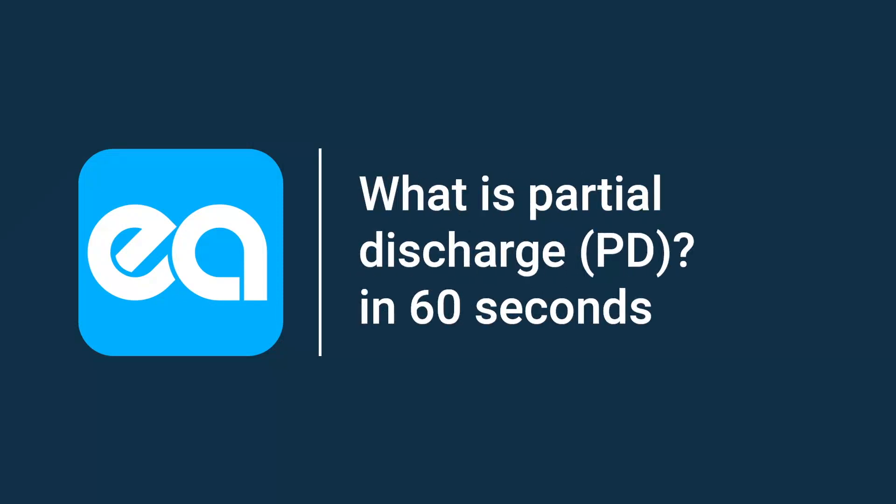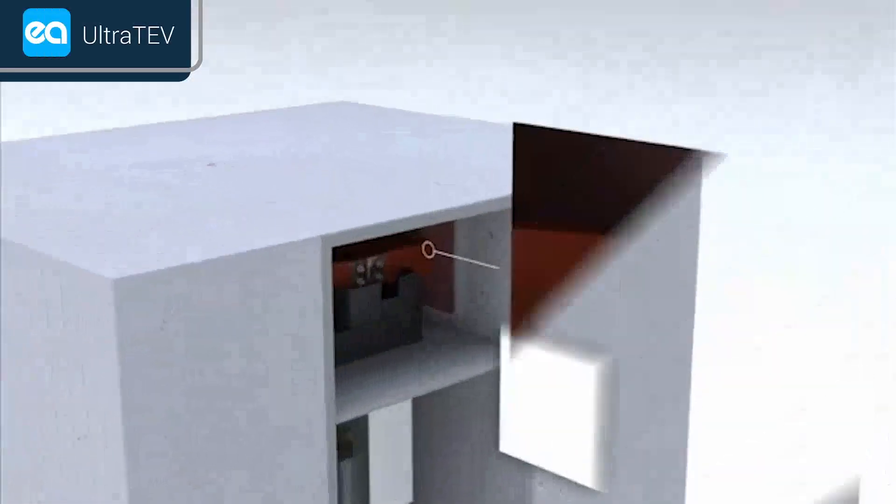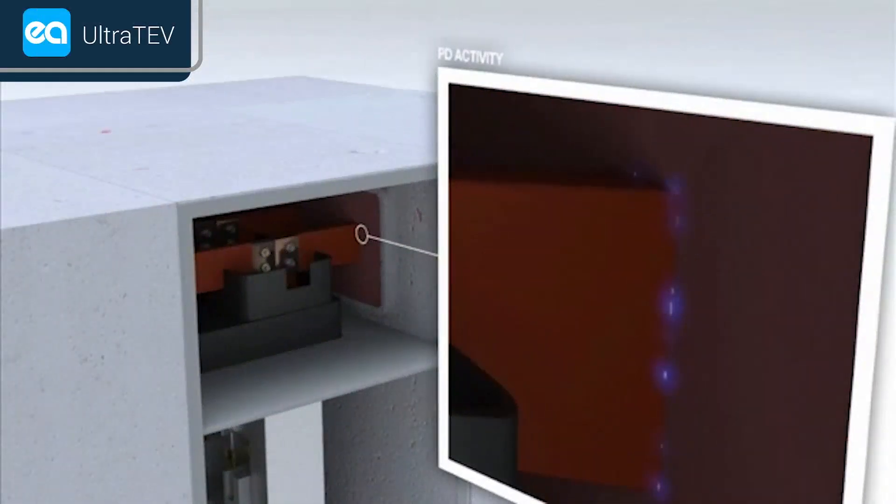What is PD? Partial discharge is an electrical discharge or spot that bridges a small portion of the insulation between two conducting electrodes. We call this PD activity.